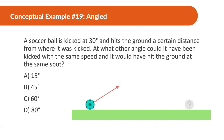A soccer ball is kicked at 30 degrees and hits the ground at a certain distance from where it was kicked. At what other angle could it have been kicked with the same speed and it would have hit the ground at the same spot? So this is kicked at 30 degrees and it lands right there. The answer is 60 degrees — if it's kicked at 60 degrees it'll land at that same spot.